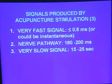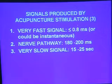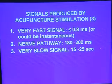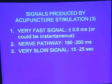What you see in an fMRI image is an initial pulse of activity, then additional activity at the 200-millisecond time frame, and then much later, additional activity corresponding to the slow meridian signal.